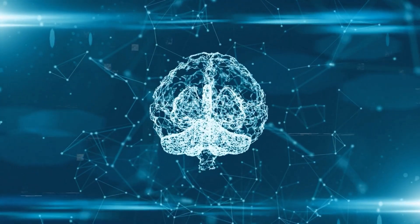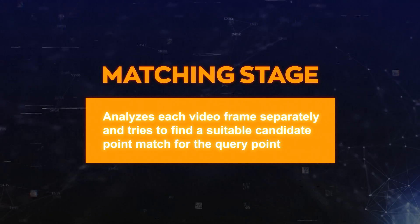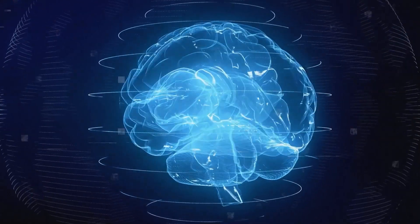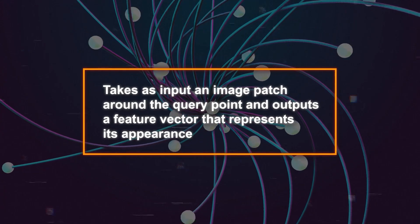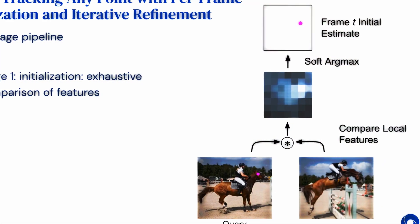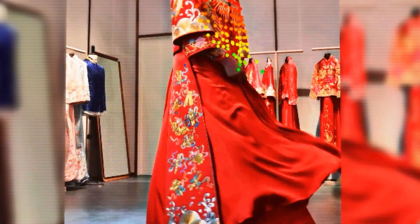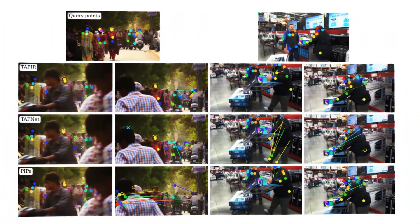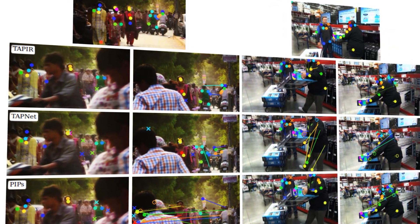So how does TAPER work? It uses a two-stage algorithm that consists of a matching stage and a refinement stage. The matching stage analyzes each video frame separately and tries to find a suitable candidate point match for the query point — the point you want to track. To find the candidate match, it uses a deep neural network that takes as input an image patch around the query point and outputs a feature vector representing its appearance. It then compares this feature vector with feature vectors of all possible points in each frame using cosine similarity and picks the most similar one as the candidate point match. This makes TAPER robust to occlusion and motion blur because even if the query point is not visible or clear in some frames, it can still find its best approximation based on appearance.